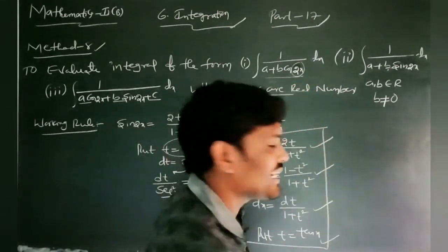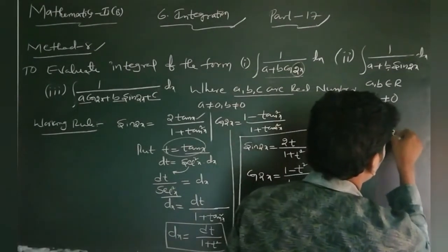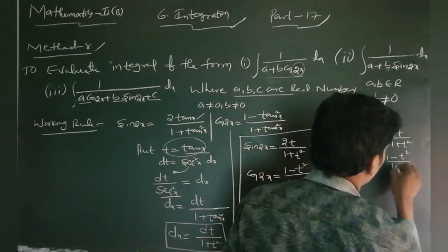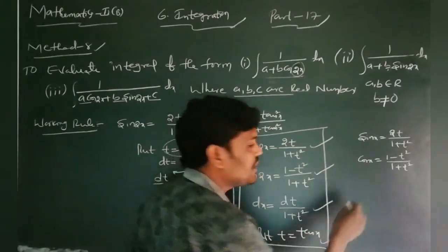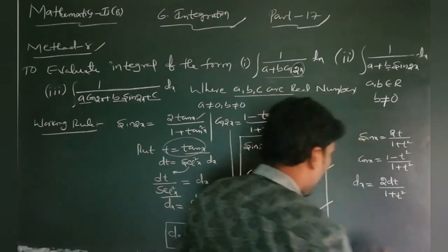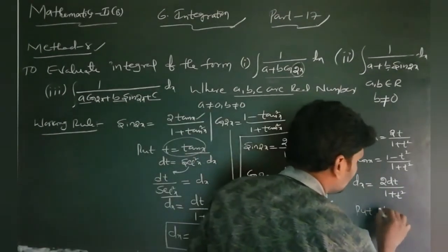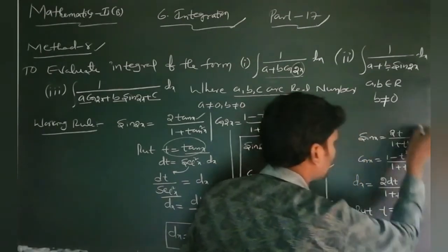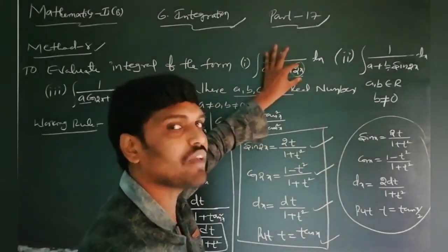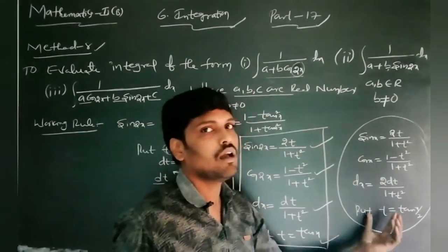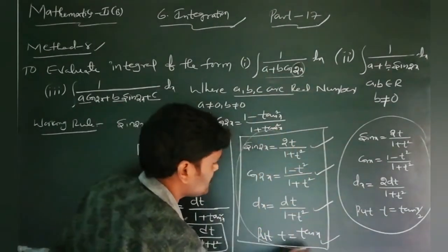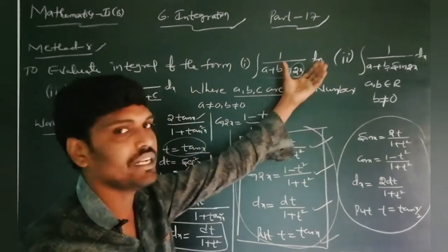When the angle is 2x, use t = tan x with dx = dt/(1+t²). When the angle is x, use t = tan(x/2) with sin x = 2t/(1+t²), cos x = (1-t²)/(1+t²), and dx = 2 dt/(1+t²). These two working rules are used depending on whether the integration involves angle x or angle 2x.